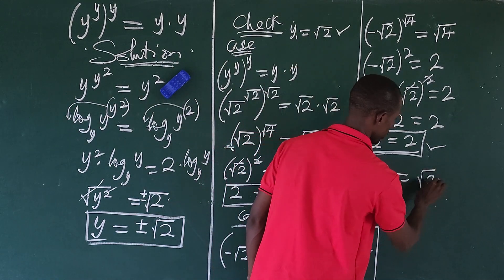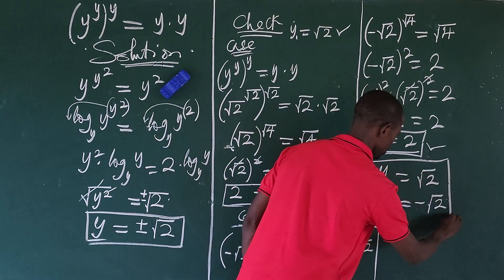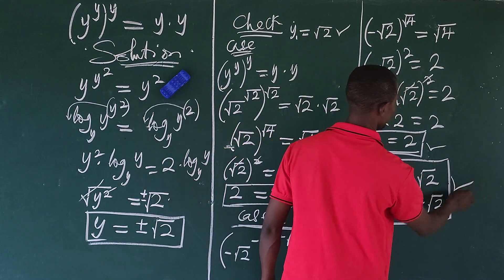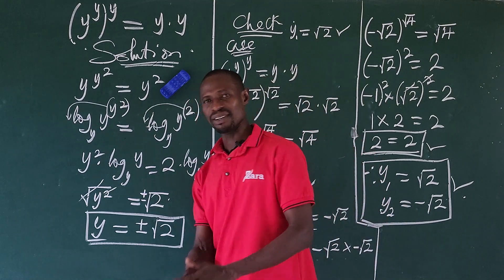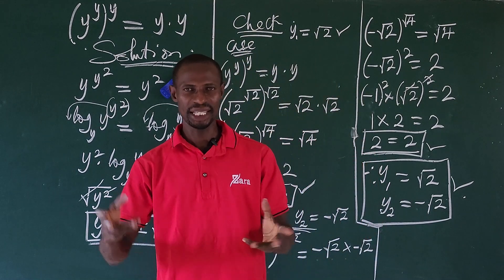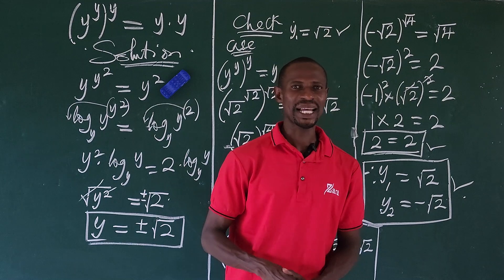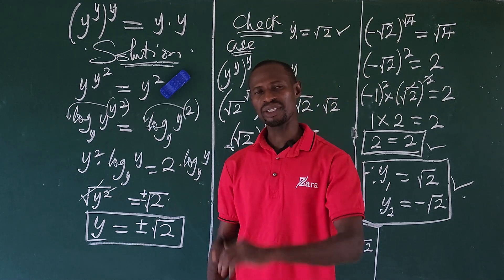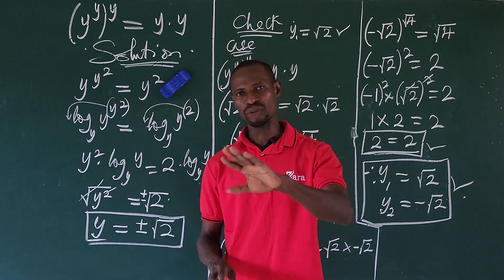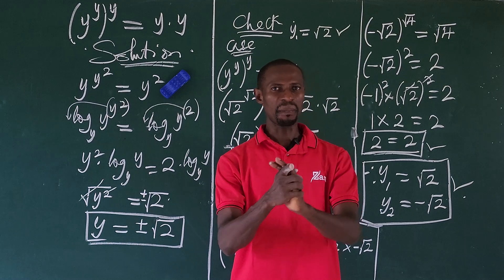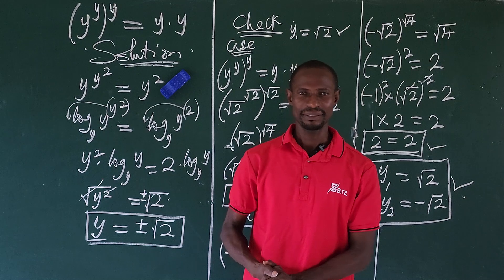Therefore, y₁ = √2 and y₂ = -√2 both satisfy the original equation. This brings us to the end of this class. If you learned something from this video, give it a thumbs up, share with family and friends who need this knowledge. This is Online Maths TV — subscribe to encourage us, and I'll release videos on your questions from the comment section. Thanks for watching!